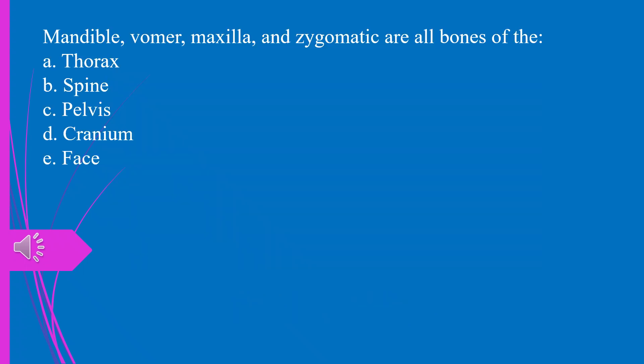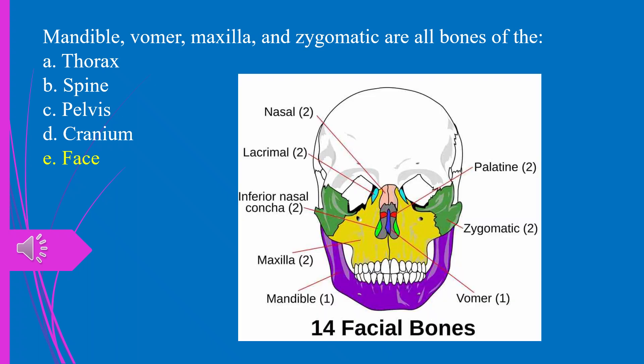Question 1. Mandible, vomer, maxilla, and zygomatic are all bones of the: a) thorax, b) spine, c) pelvis, d) cranium, e) face. The answer is e, face.